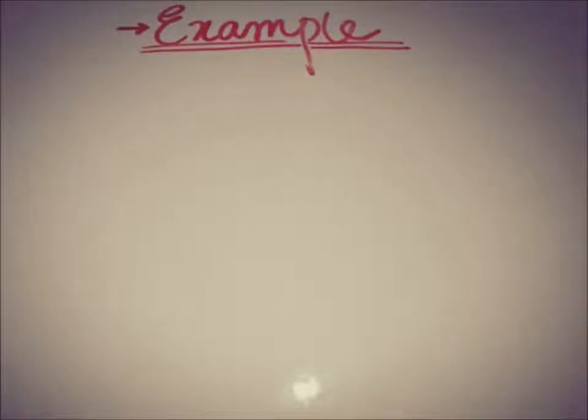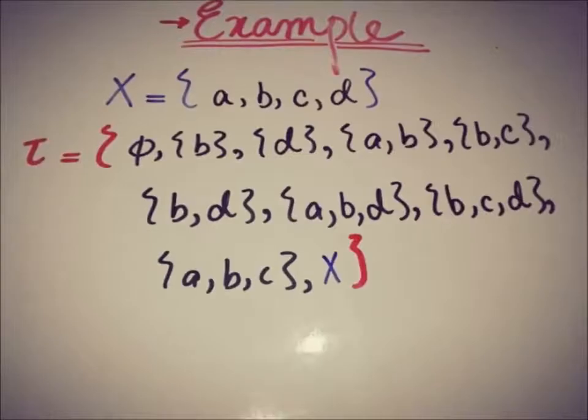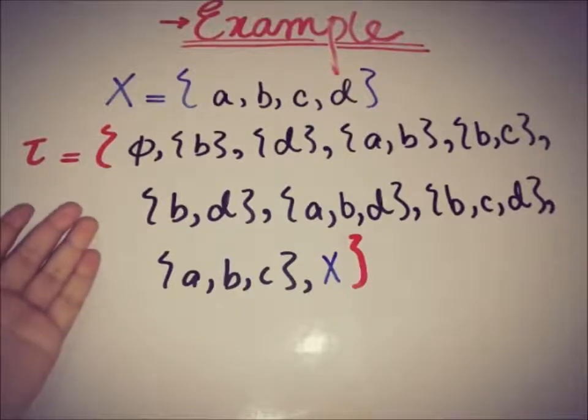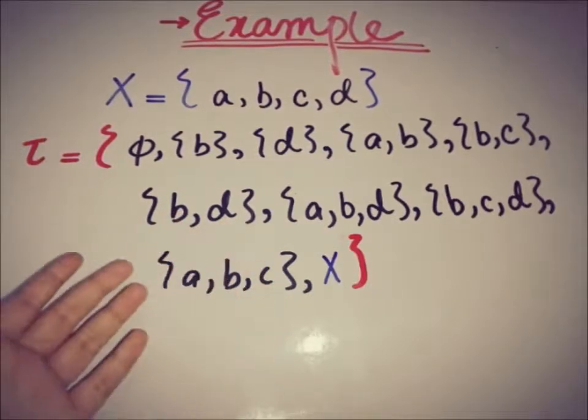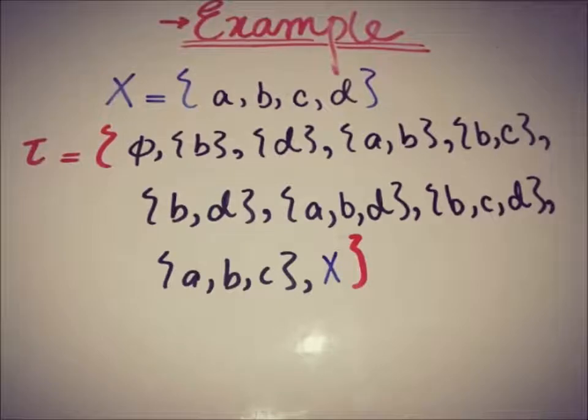Thank you for pointing this and really very sorry for this mistake. So the correct example of a topological space is: here we have a space X that is finite and contains elements a, b, c, d, only four elements. And the collection of subsets that is τ, a topology having elements empty set, {b}, {d}, {a,b}, {b,c}, {b,d}, {a,b,d}, {b,c,d}, {a,b,c}, and the space X.